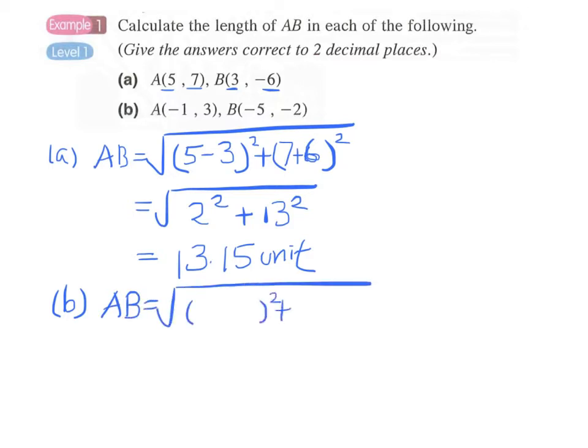We first write the format of the distance formula. Again we can make A as x1, y1: -1, 3. And if we choose point A as x1, y1, we remember we have to stick to that choice. For B we have -5.